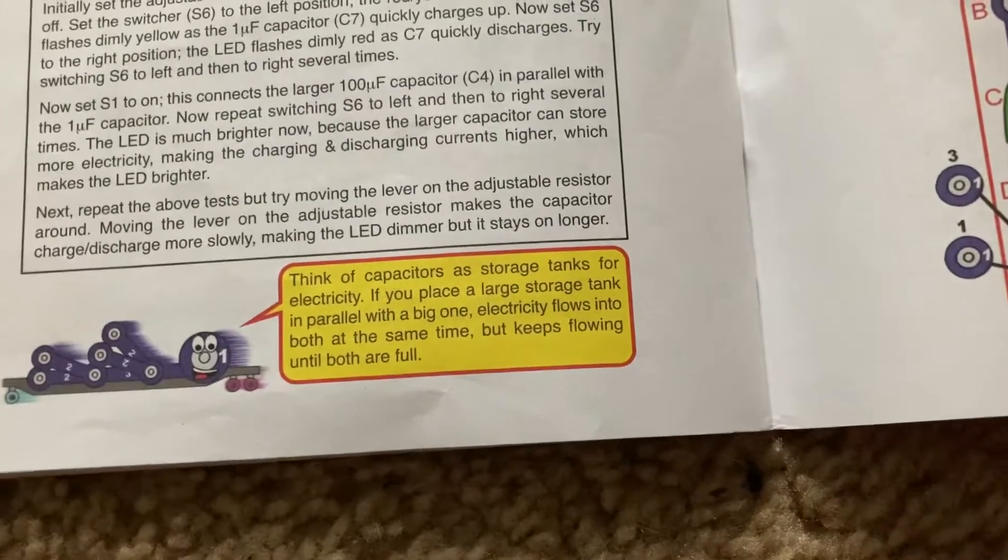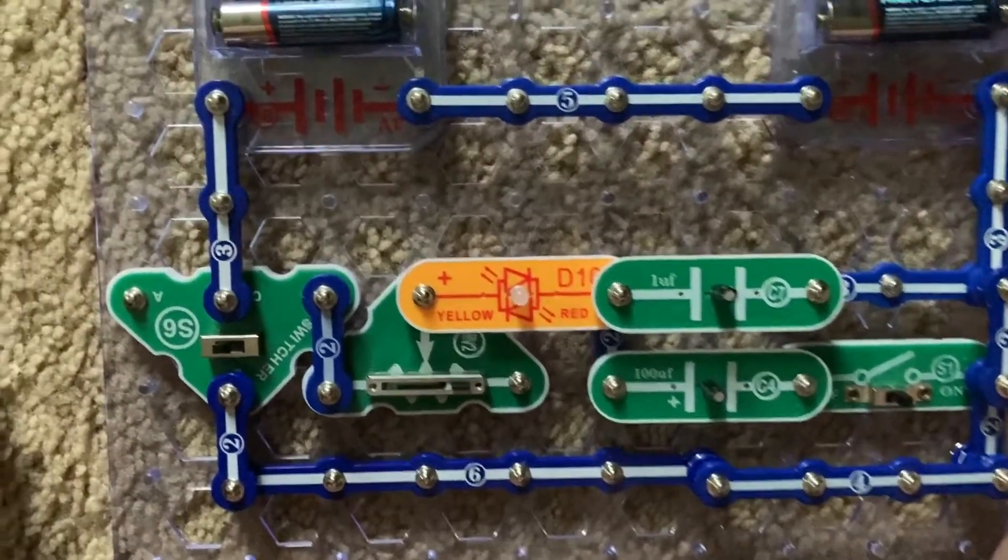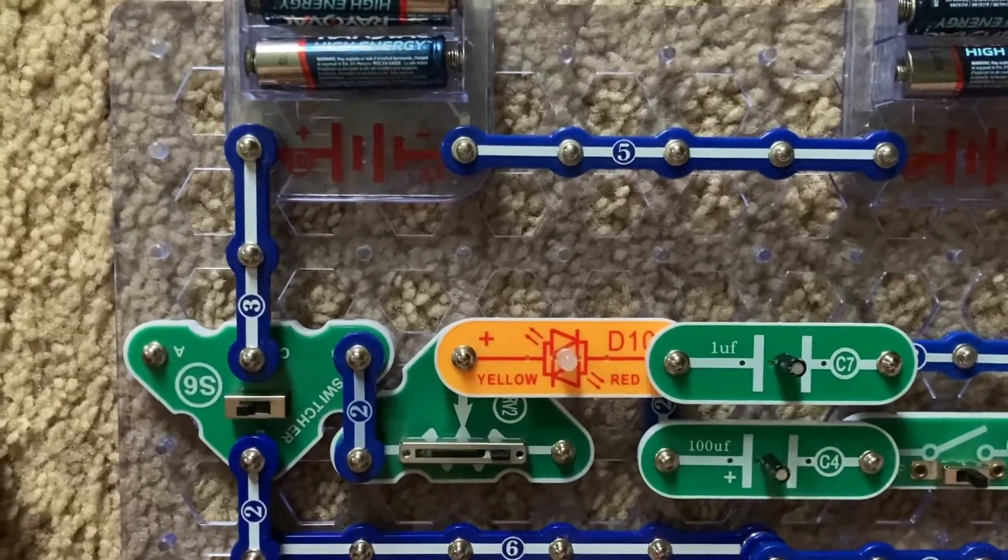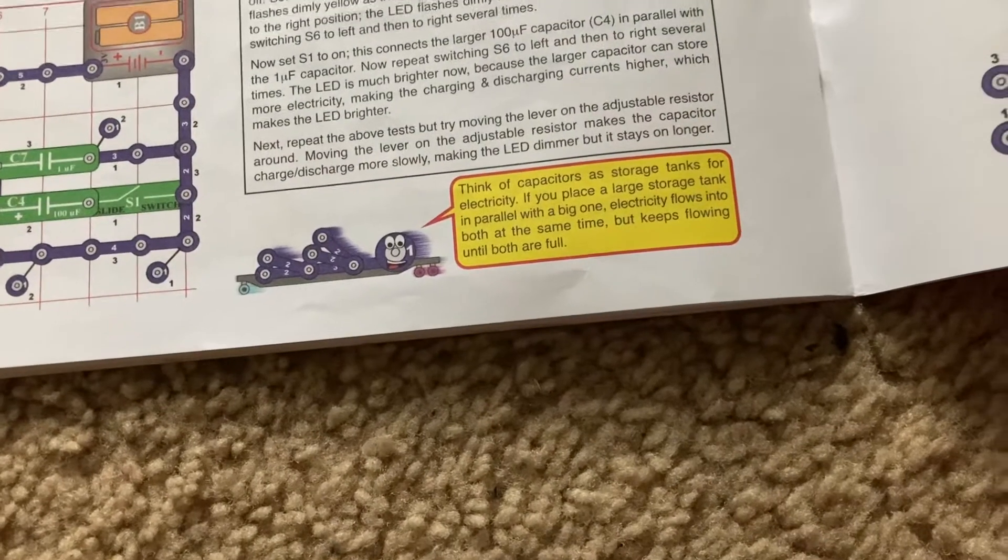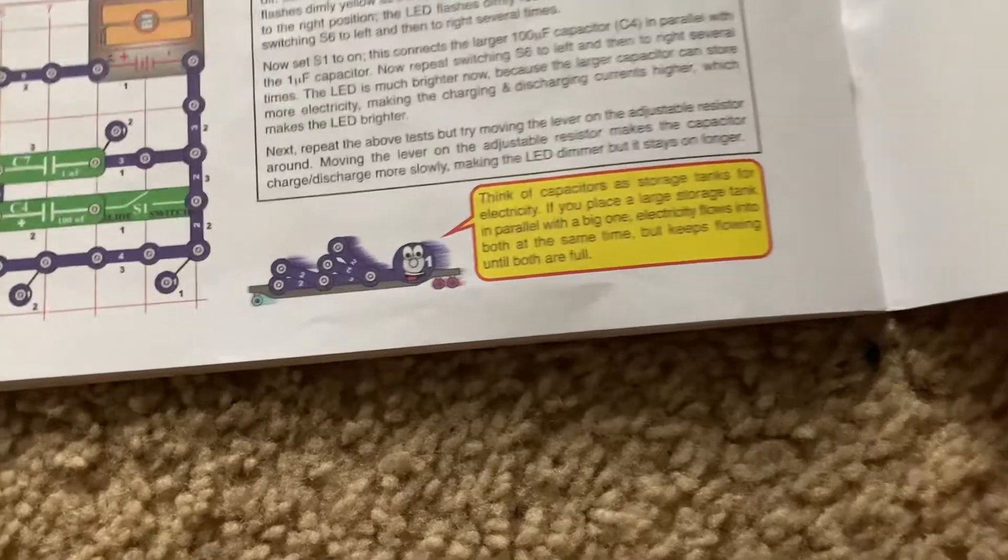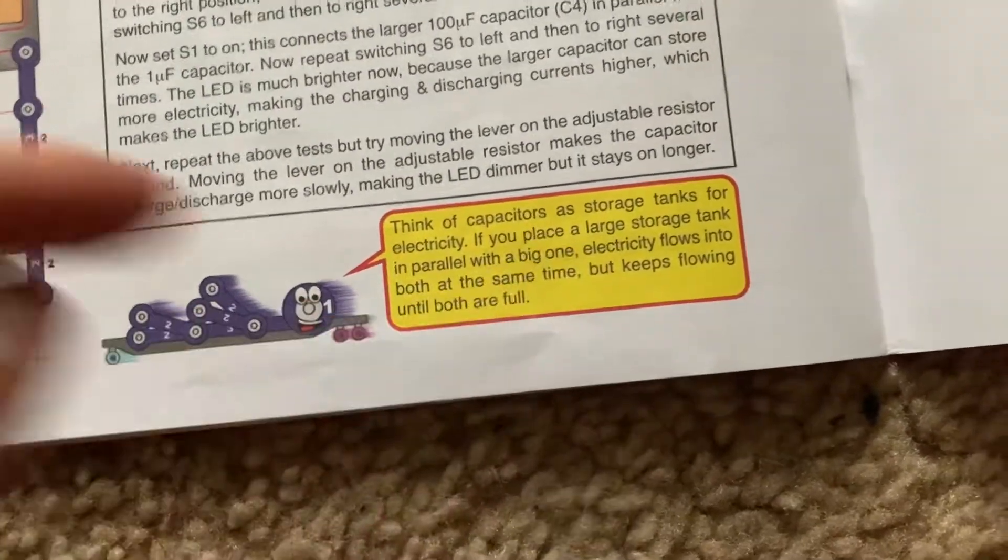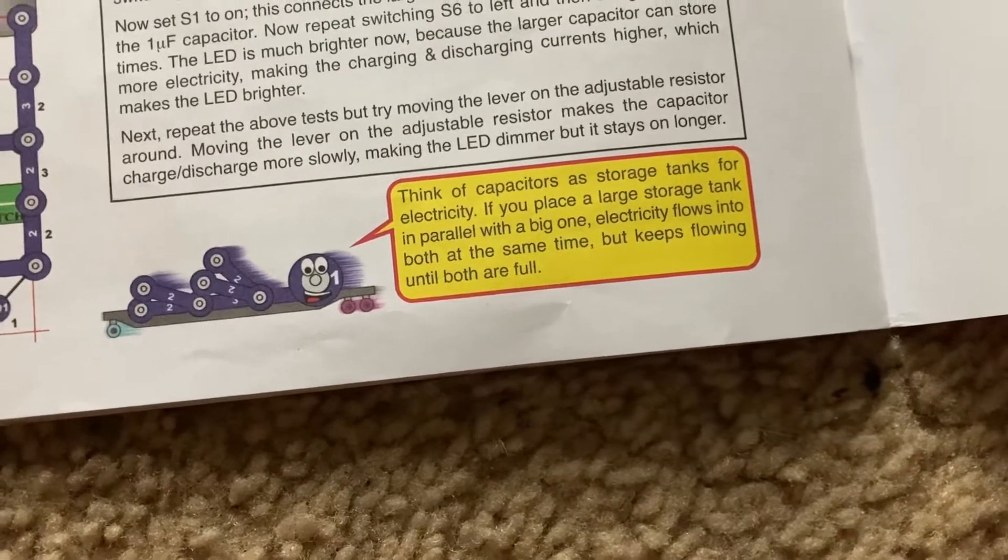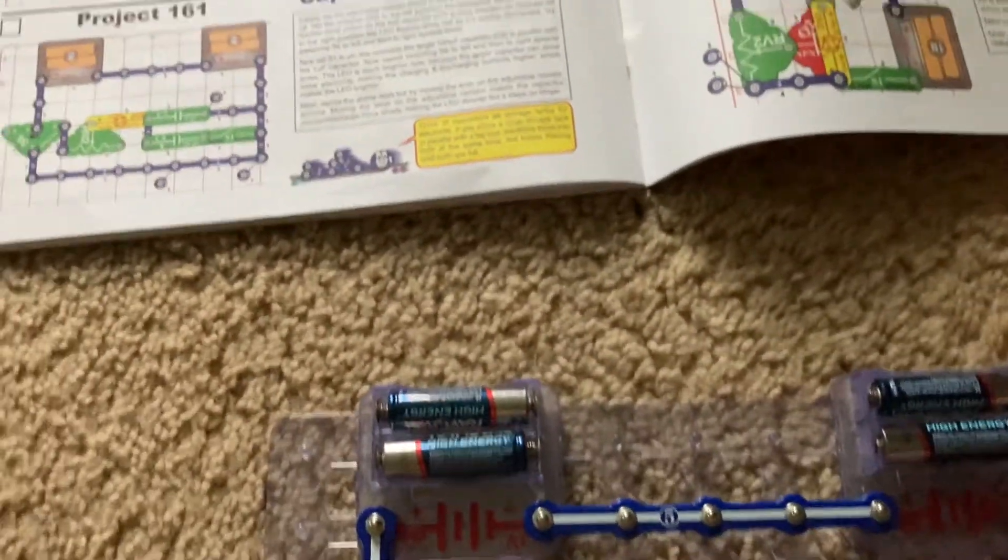Now with the storage tank analogy regarding the parallel circuit, if you placed a large storage tank and a small one side by side in parallel, electricity will flow into both at the same time, but the flow will continue until both tanks are completely full.